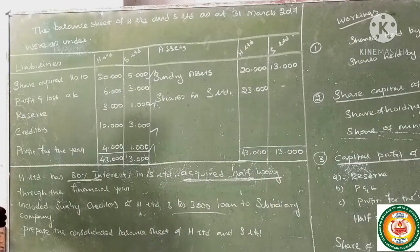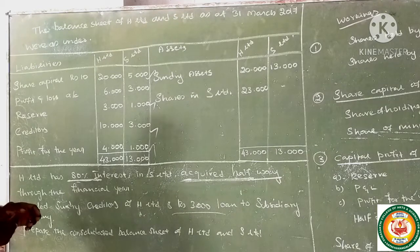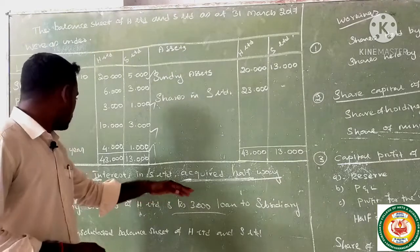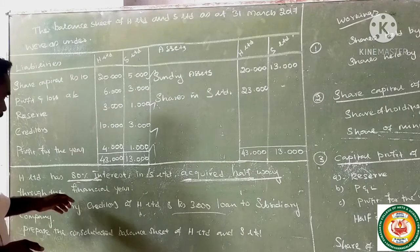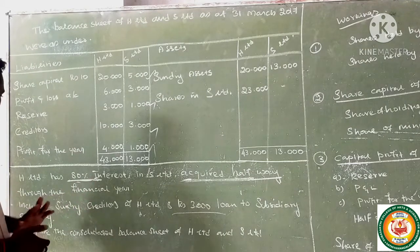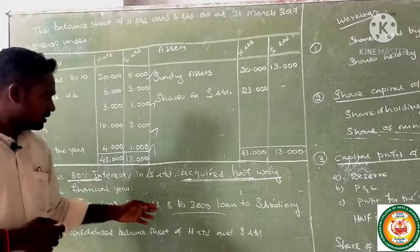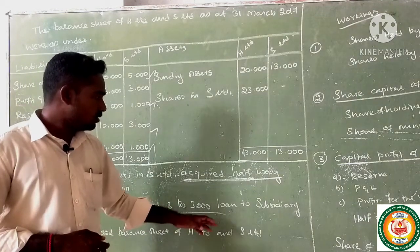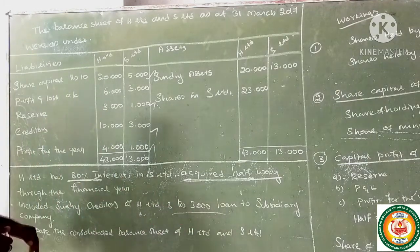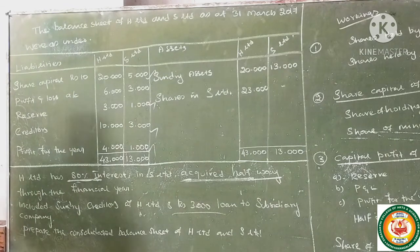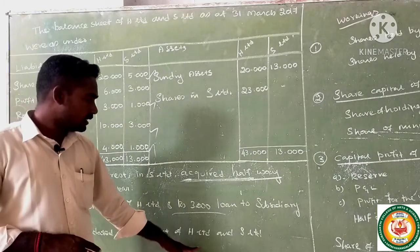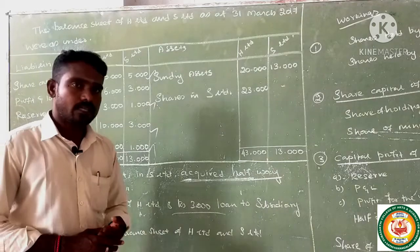HL has 80% interest in S Limited, acquired halfway through the financial year. Included in sundry creditors of HL is Rs. 3,000 loan to the subsidiary company. Prepare the consolidated balance sheet of HL and S Limited.